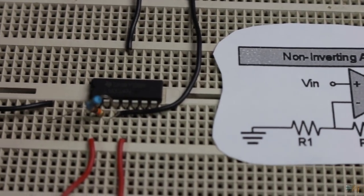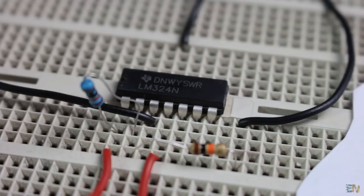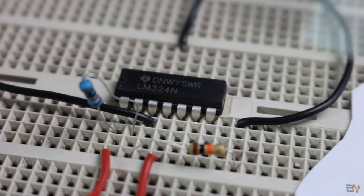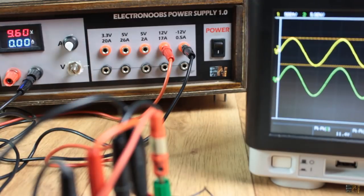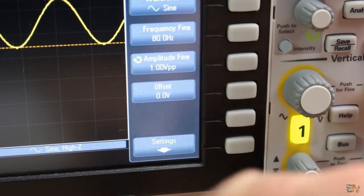Now I mount this circuit on my breadboard with resistor values of 1 and 10 kohms. I supply positive and negative 12V to the amplifier and apply a 1V peak to peak sine wave at the input.